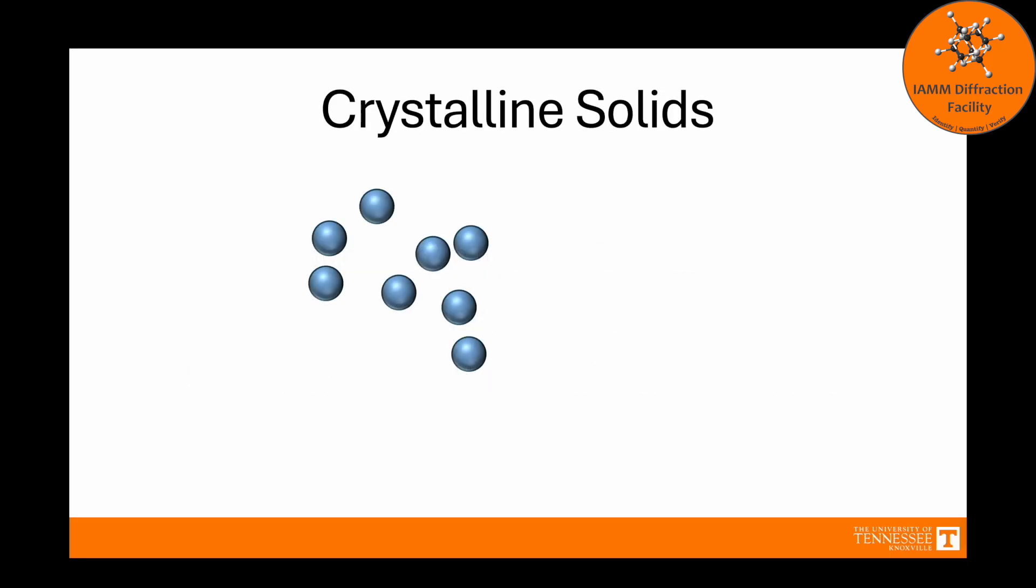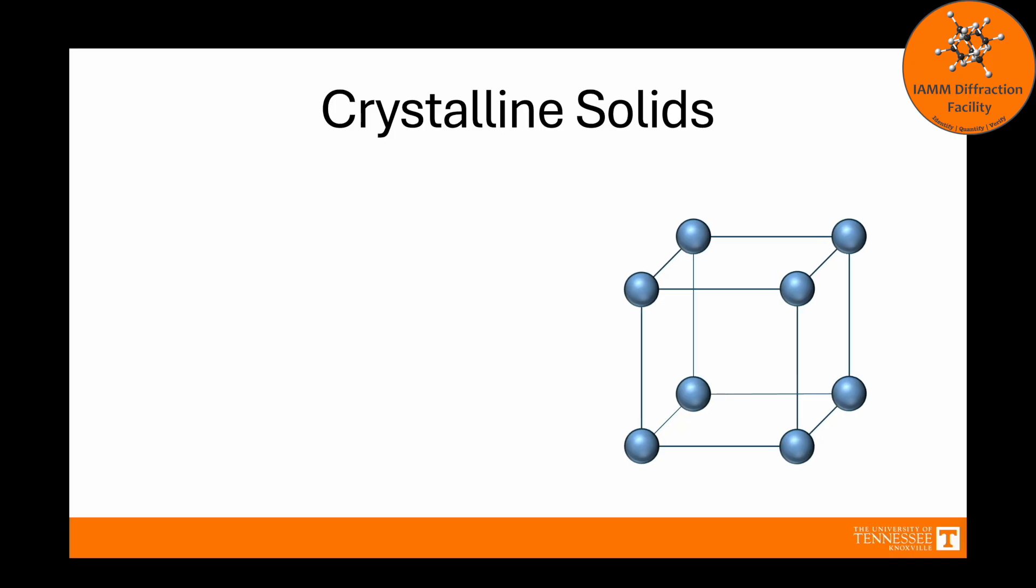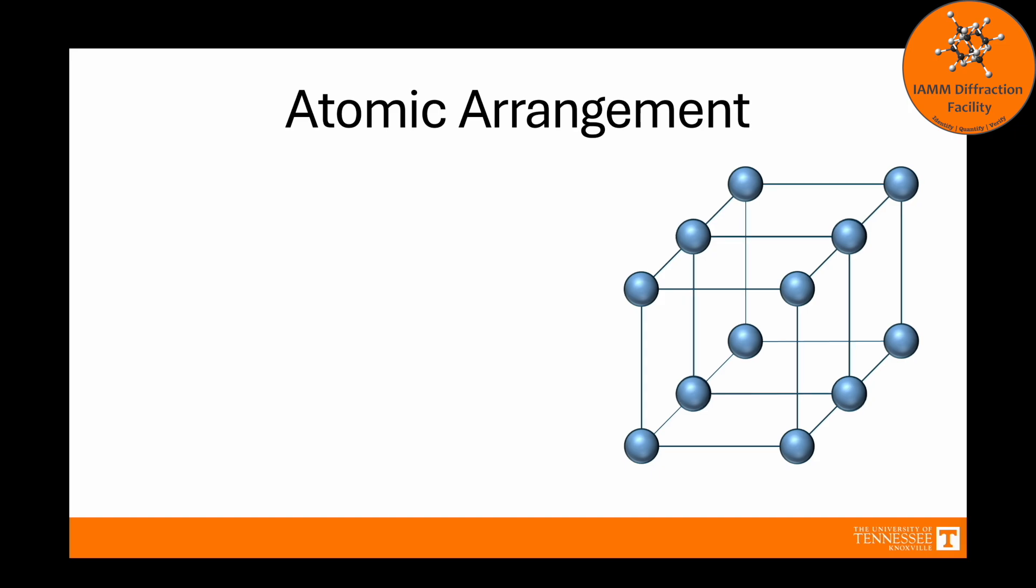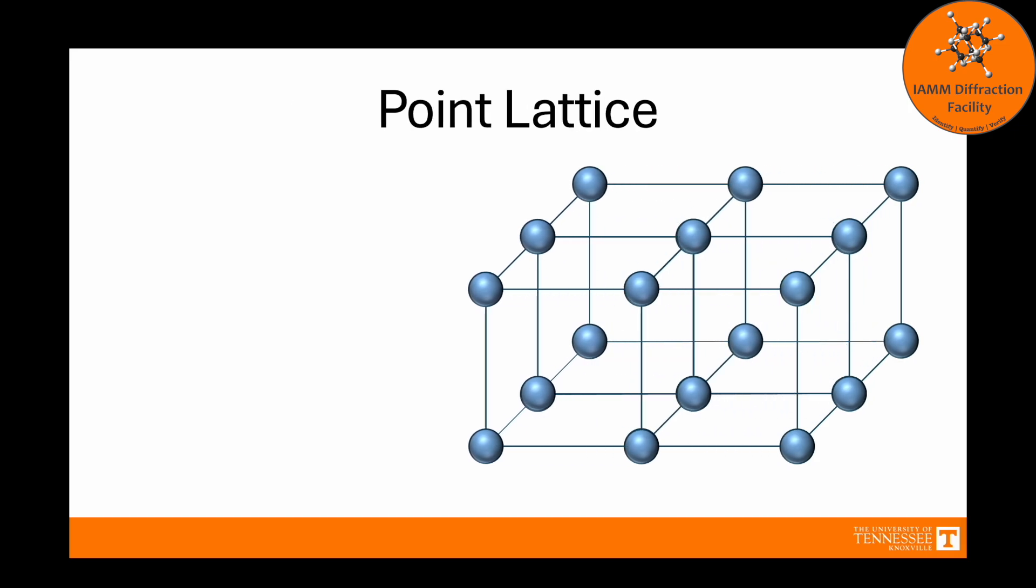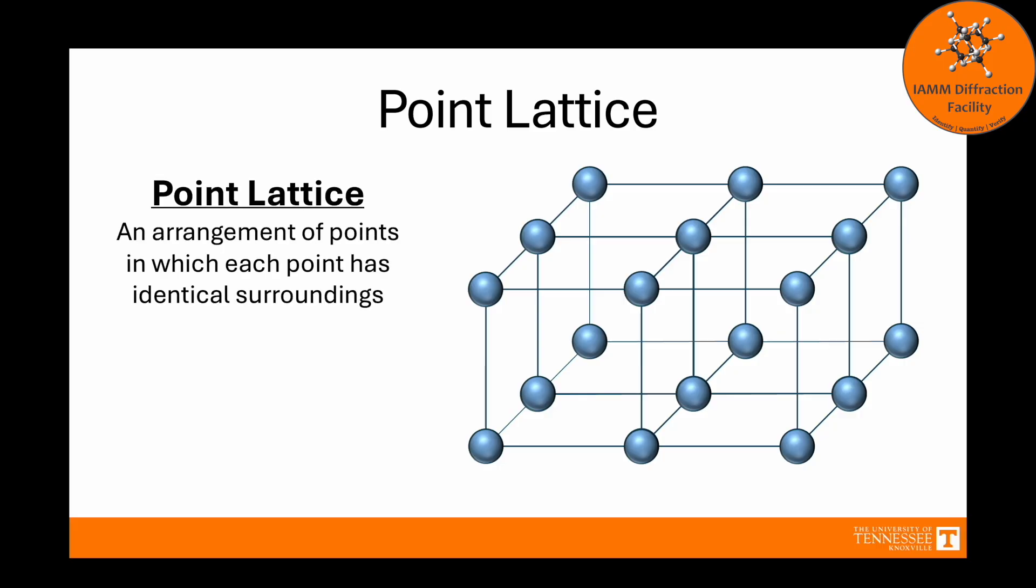First off, atoms in crystalline solids like to arrange themselves in nice, orderly structures. Here we see the simplest case where there is an atom at each corner of a cube. This arrangement repeats itself throughout a sample, many more times than just the four shown here. We have point lattice. It is an arrangement of points in which each point has identical surroundings. In our case, this atom here has the same surroundings. It has an atom to the left, right, back, front, top, and bottom, just like this atom. Its environment is exactly the same as every other atom in this set of cubes.